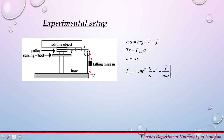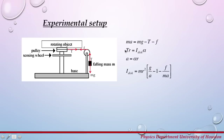Now let's write down the second law equations. For the falling mass: ma equals mg minus tension in the cord minus the friction force. For the rotating object, the sum of all torques equals the moment of inertia times the angular acceleration. The force is tension, the lever arm r is the radius of the pulley, and the angle between the lever arm and the force is 90 degrees, so sine of 90 degrees is 1.